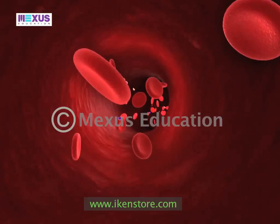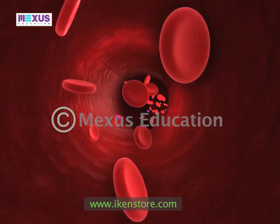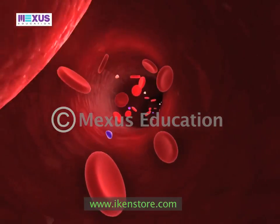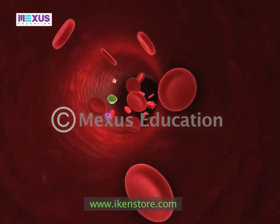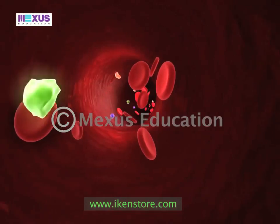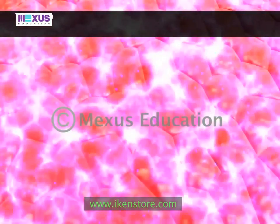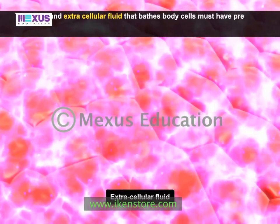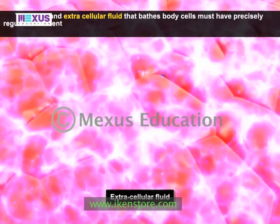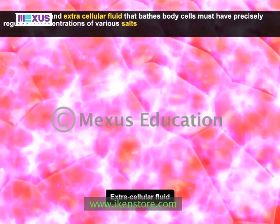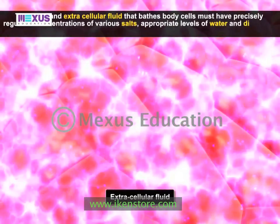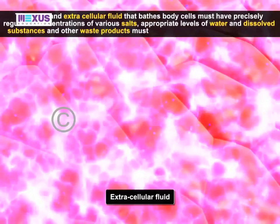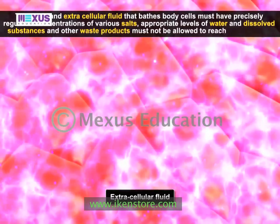These excess materials, drugs, toxins and wastes, if allowed to build up in the bloodstream, can threaten an individual's health by throwing off critical chemical balances. The blood and extracellular fluid that bathes body cells must have precisely regulated concentrations of various salts, appropriate levels of water and dissolved substances, and other waste products must not be allowed to reach toxic levels.